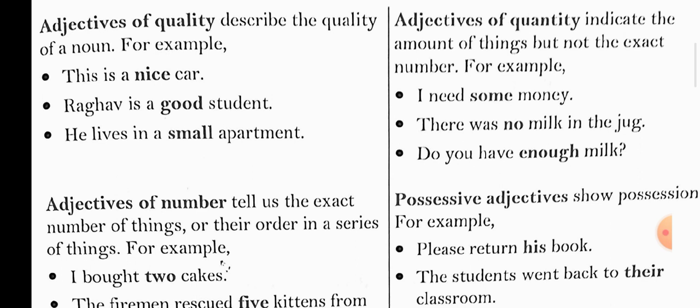Second, adjective of quantity. It indicates the amount of things but not the exact number. For example: I need some money. How much money? Some. Here the word 'some' is telling the amount and the quantity of something.